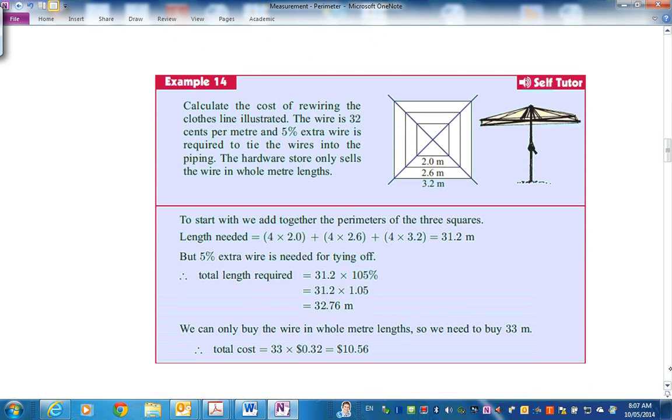Let's have a look at a more interesting problem. Here's a clothesline. Fairly old fashioned now. And let's say that these are wires in here where you hang the clothes on these here. So that's from looking down from the top elevation there looking down on the clothesline. And these are the supporting beams on the corners here going right diagonally across. And then it's supported by this pole in the middle. Do you get it? We want the cost of rewiring the clothesline. The wire is 32 cents a metre. 5% extra wire is required to tie the wires at the ends. And the hardware store only sells the wire in whole metre lengths. So we want to total up the perimeters of all these here, don't we?